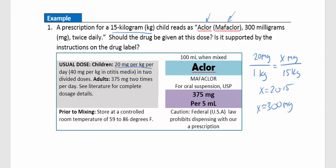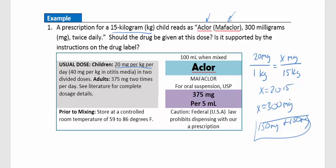Going back to the usual dose — 20 mg per kg per day in two divided doses — we would split this into divided doses: 150 mg one time and 150 mg a second time in a day. The prescription calls for 300 mg twice daily. That is twice the amount we're supposed to give. So no — consult a doctor before giving the medication.